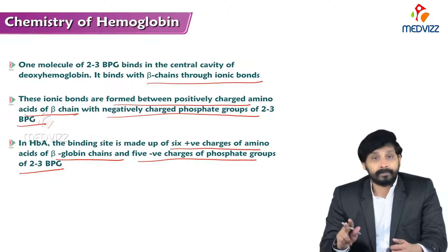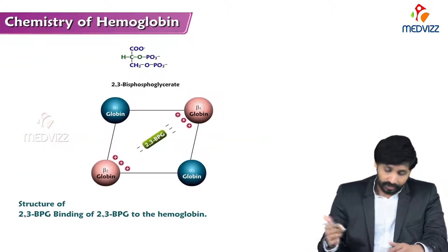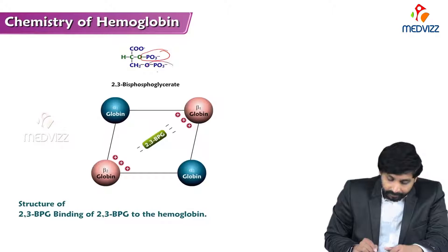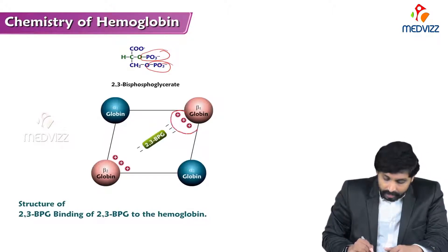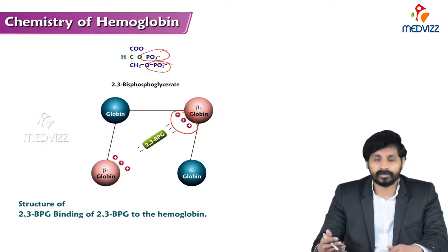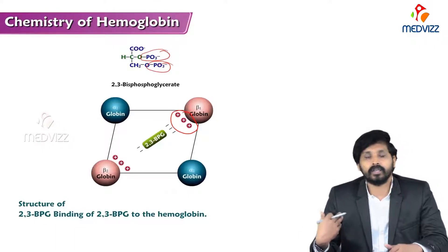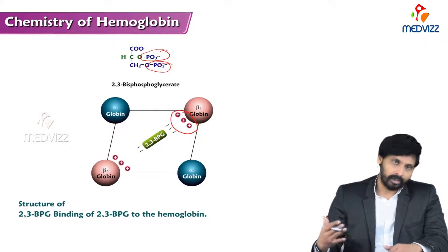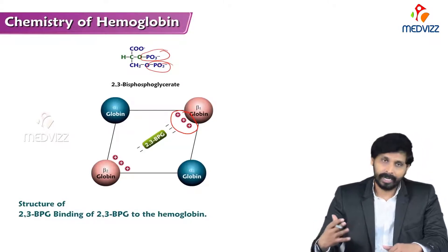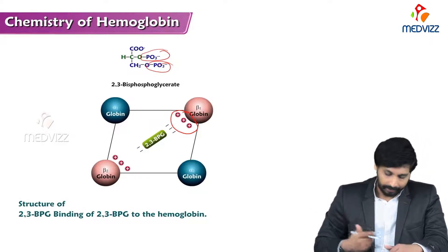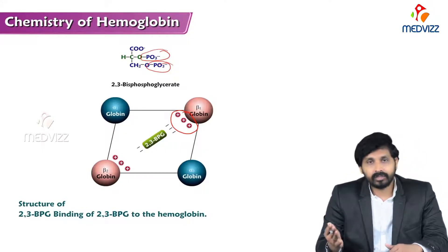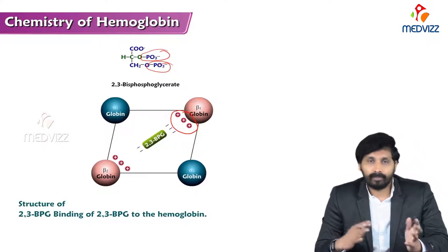As seen in the diagrammatic representation, the negative charges of 2,3-BPG interact with the positive charges on the globin chain due to basic amino acids — arginine, lysine, and histidine — which are mainly present in the globin chains, with histidine being the primary one. These ionic interactions occur between the positively and negatively charged substances.